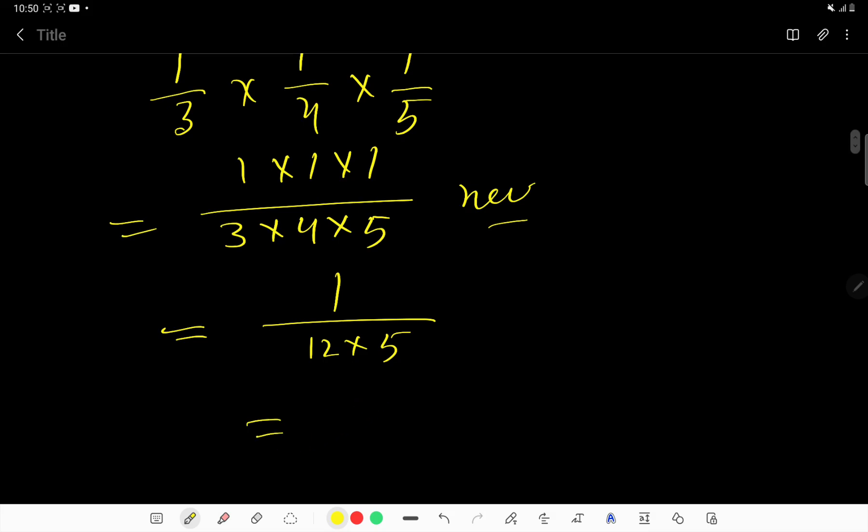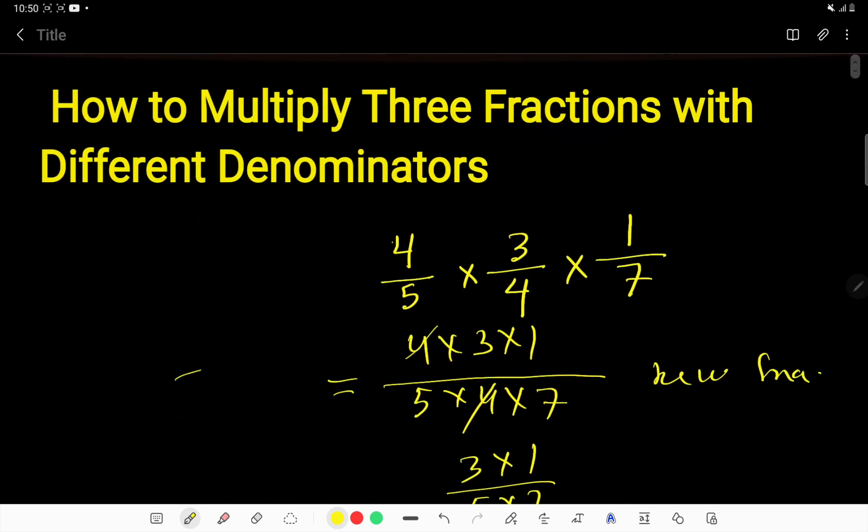So 12 times 5 is 60, right? 1 over 60 is the answer.